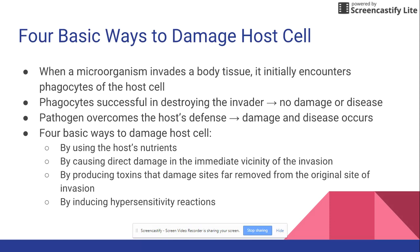If phagocytes destroy the pathogen, there's no damage and no disease occurs. If they can't successfully destroy it, the host defense system gets overwhelmed and that's when damage and disease will occur. A pathogen can damage the host cell in four different ways: it can use the host's nutrients, directly damage the cell, produce toxins, or produce a hypersensitivity reaction — like an allergic reaction.